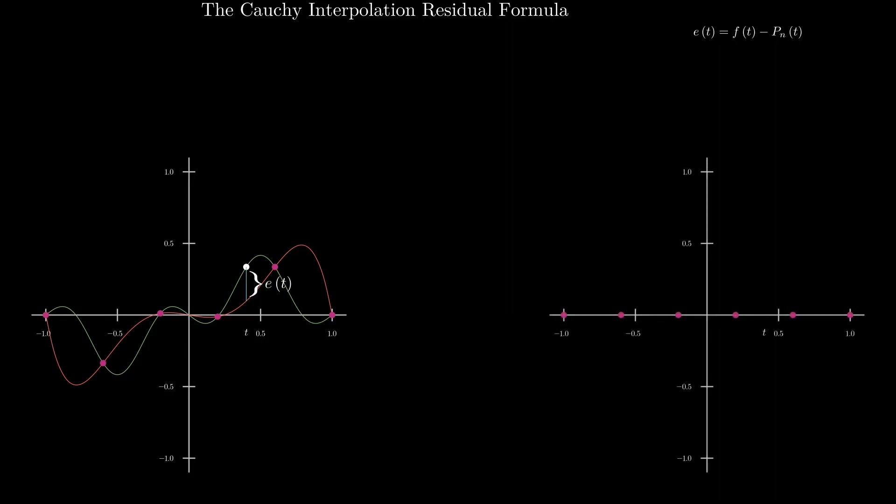To prove the theorem, our first step is to simply state that the error is the difference between the function and the interpolating polynomial, p sub n, at the point t. Clearly, if t is one of the nodes, we need go no further as the error is zero. Otherwise, we extend the polynomial to interpolate at t as well.